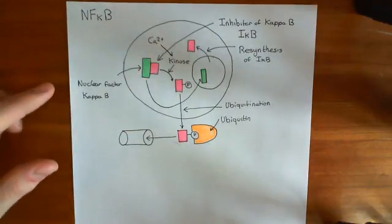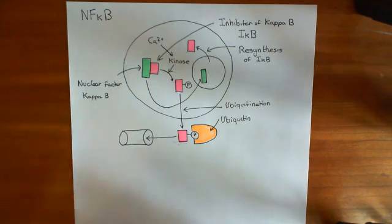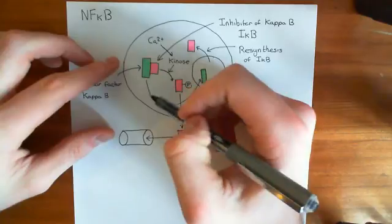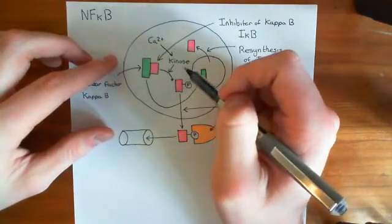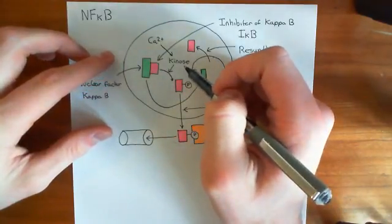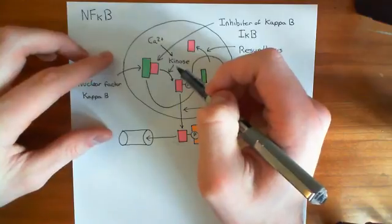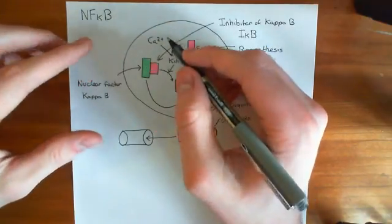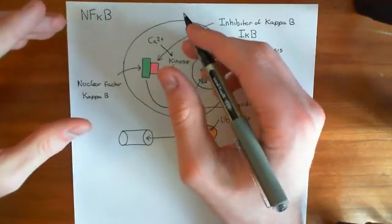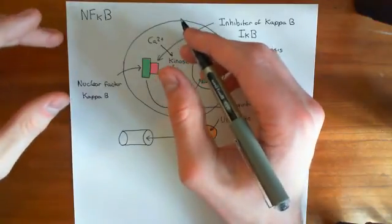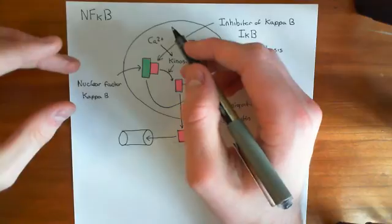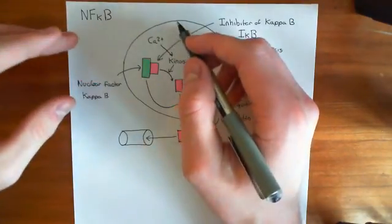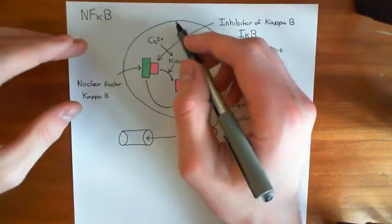Now what we want to see is, if you've got a certain number of calcium ions that you can use to stimulate the cell with, what is the best way to use them? You've got a set number, and I'll tell you exactly how we can do this experimentally in a moment. You've got a set number of calcium ions — let's say you've got 10 million to put in. What is the best way to deliver them?